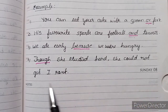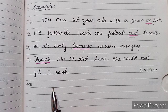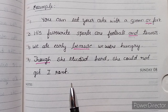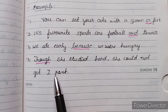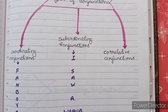Why did we eat early? Because we were hungry. The fourth example: 'Though she studied hard, she could not get first rank.' You may think there is no word combining the two sentences, but don't think a conjunction must always come between words — sometimes a conjunction comes at the beginning of the sentence. Here, 'though' is the conjunction.